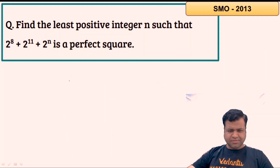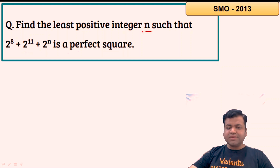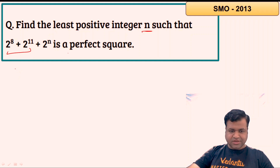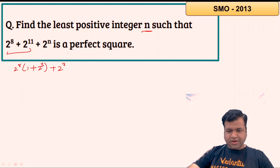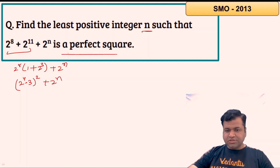Let's proceed to the next question. This is a simple question of number theory. We need to find the least positive integer n such that 2^8 + 2^11 + 2^n is a perfect square. Let's first simplify the first two terms by taking 2^8 common, leaving us with 1 + 2^3, which gives 9 × 2^8. So we can write this as (2^4 × 3)^2 + 2^n, which equals 48^2 + 2^n, and we want this to be a perfect square m^2.